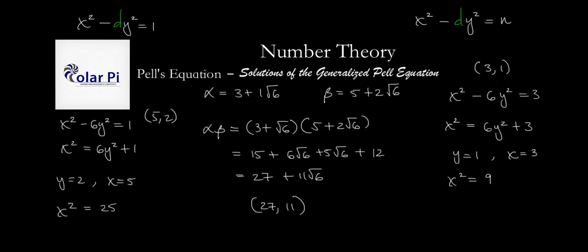Let's check: 27 squared is 729. Then 729 minus 6 times 11 squared. 11 squared is 121, and 6 times 121 is 726. And 729 minus 726 does equal 3. Obviously this specific check isn't a proof — the rest of the video will be the proof of why this method works. If you're satisfied already, feel free to stop here; otherwise, stay tuned.